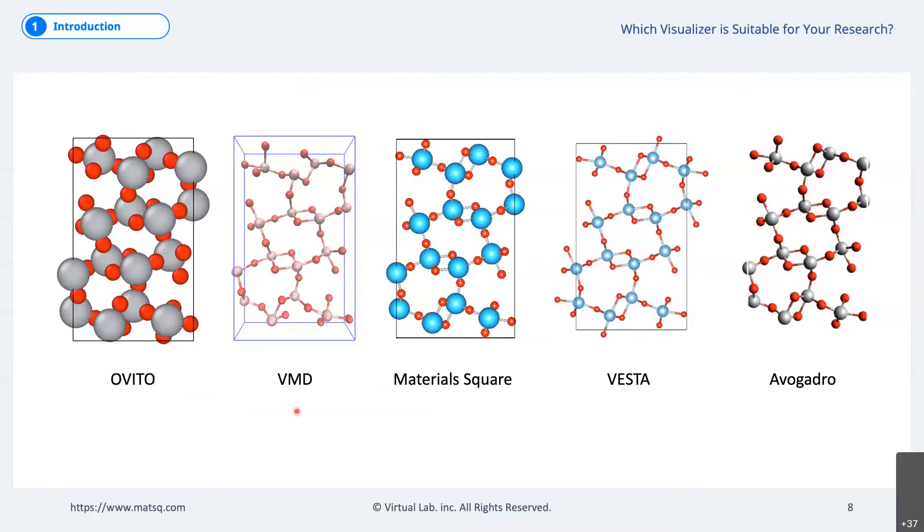The second, VMD, is a visualizer developed by UIUC and its development group is in the field of biophysics. So, it provides various functions for visualization of biofields, especially protein. The characteristics of OVITO and VMD are that the program is very light and it is easy to handle large number of atoms.